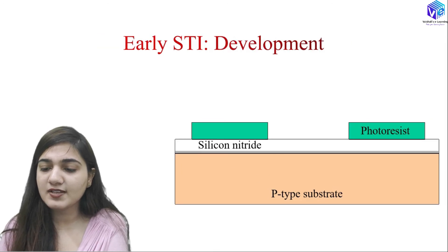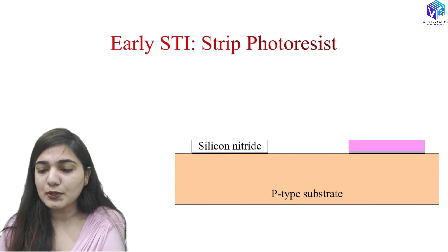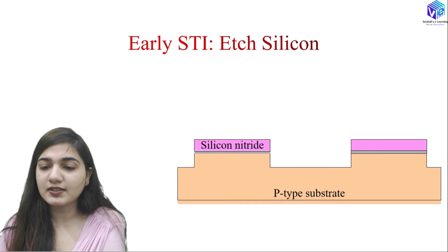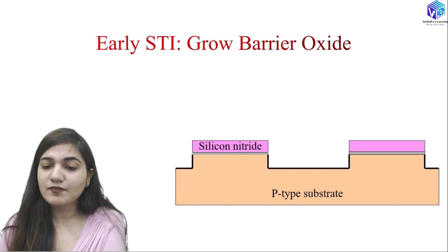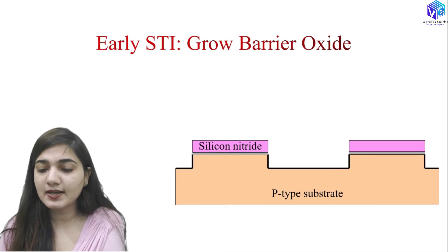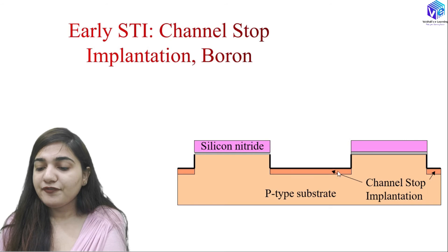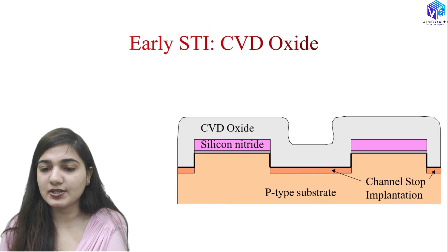After the exposure phase, we remove the photoresist at the desirable location, then etch out the nitride and pad oxide, then strip off the photoresist. We then etch the silicon to form the trench. After that we grow a barrier oxide layer — a very thin layer. Then we perform channel stop implantation using boron, forming a highly doped p-type structure in the p-type substrate. This is called the channel stop implantation.